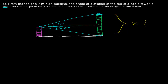As per the question, we have a 7 meter tall building. I have two angles — one angle of elevation and another angle of depression. Since this ground is parallel to the horizon, by alternate interior angles, this angle and this angle will be equal. So this will also be 45 degrees. So now I have two right angle triangles.